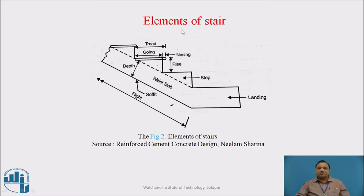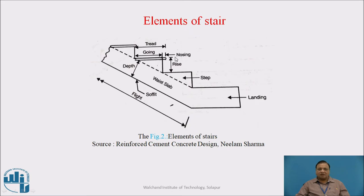Figure 2 shows the elements of stairs. In the elements of stairs, we have tread and rise. Rise is the height of each particular step. The portion which is horizontal is called going, and any projection of the upper flooring is called nosing. This is the waist slab at the bottom, this is the thickness of waist slab, and this is the landing portion.